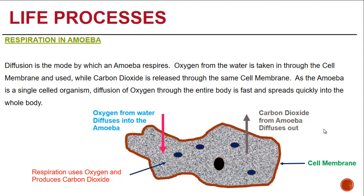How does respiration in a unicellular organism like an amoeba take place? It takes place by the mode of diffusion. Oxygen from the water is taken in through the cell membrane and used, while carbon dioxide is released through the same cell membrane. As the amoeba is a single-cell organism, diffusion of oxygen through the entire body is fast and spreads quickly into the whole body.